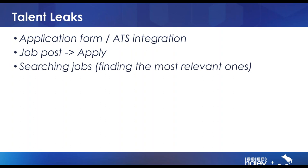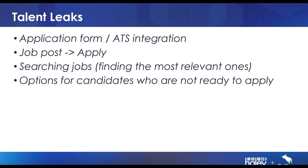Often from the job post to the apply there's a huge fall-off — you get the candidate to a job post but the post doesn't sell them and they don't click apply. Sometimes it's higher in the process, in searching jobs. I've seen examples where it would say keyword, location, category — all fill-in-the-blank boxes — but if I'm a candidate, how do I know where you have jobs or what categories to search for? We also need to think about candidates who aren't ready to apply — passively active people looking at jobs but not ready to commit. What options do you give them?